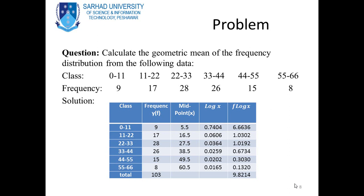Taking the midpoint of each class by adding upper and lower limits and dividing by 2: (0+11)/2 = 5.5; (11+22)/2 = 16.5; (22+33)/2 = 27.5; (33+44)/2 = 38.5; (44+55)/2 = 49.5; (55+66)/2 = 60.5.